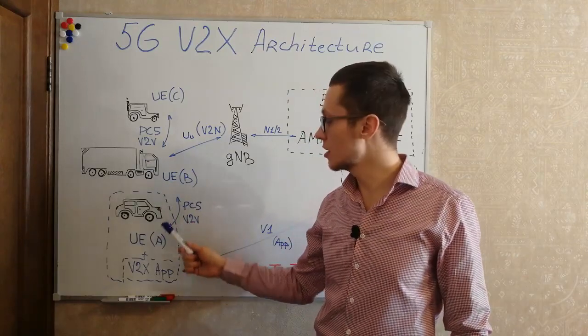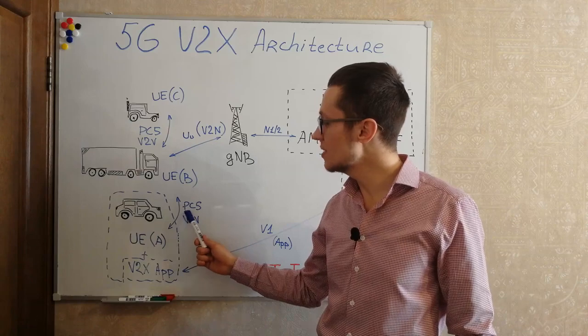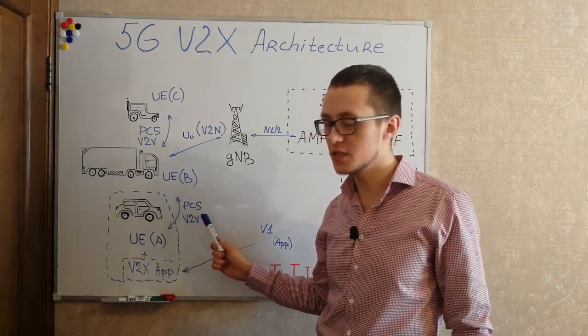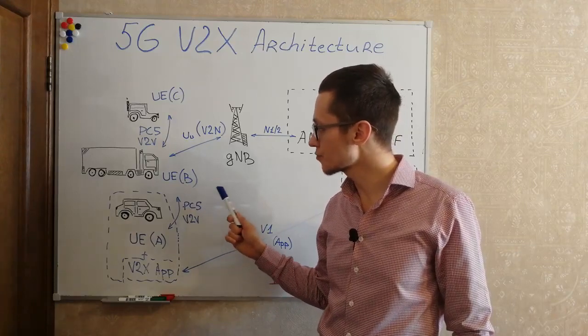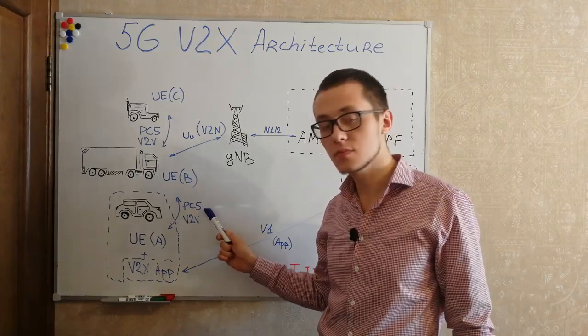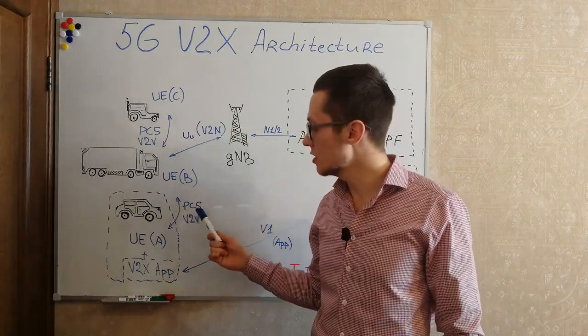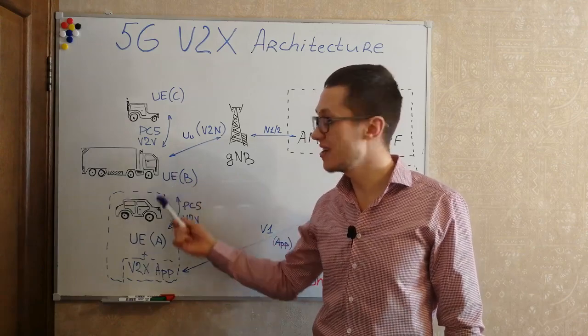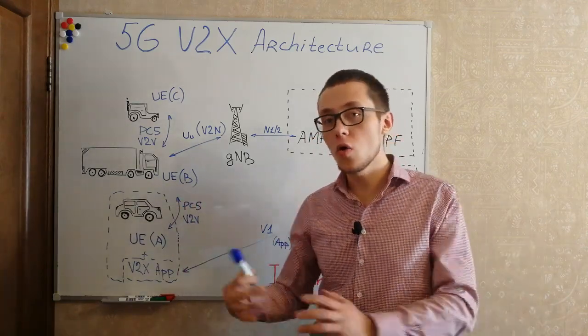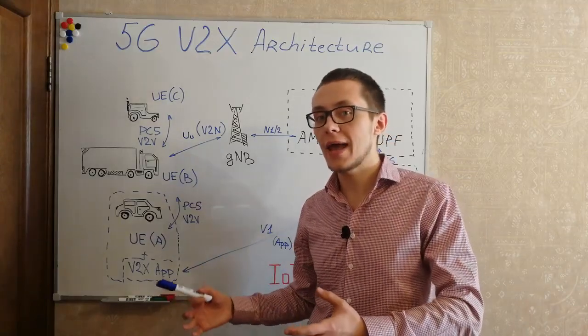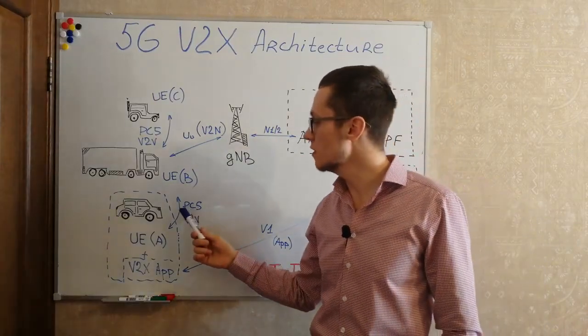And of course, such cars can communicate to each other as vehicle-to-vehicle case via PC5 interface. PC5 interface, it is a radio interface basically specially designed for such direct communication. PC5 interface may be based on NR or maybe based on LTE and connected to 5G core network. This is very interesting.